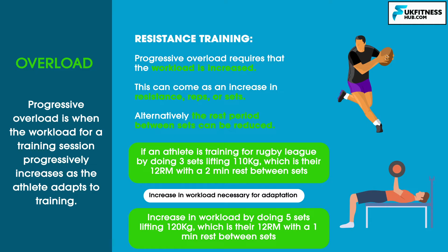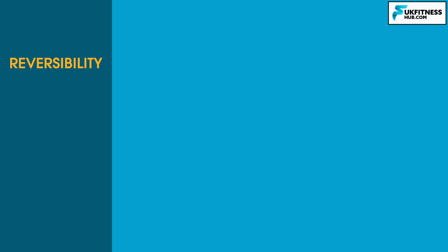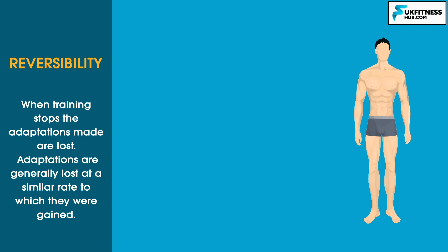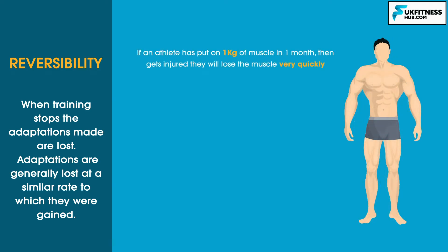If you took somebody with a 40kg bench press and each week they added 1kg to the bar, they would eventually have linear progression as the weight increases week by week. Next we have reversibility. Reversibility is the fact that when training stops, the adaptations made are lost. Adaptations are generally lost at a similar rate to which they were gained. So if an athlete put on 1kg of muscle in one month and then got injured, they would lose the same amount of muscle very quickly.